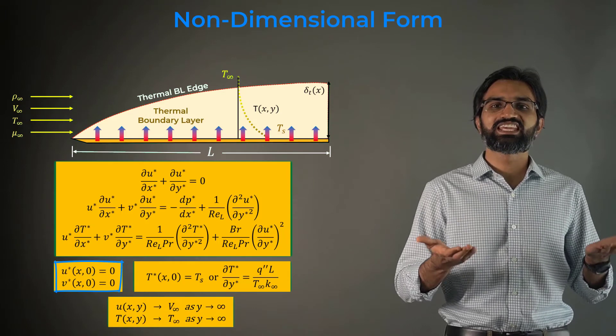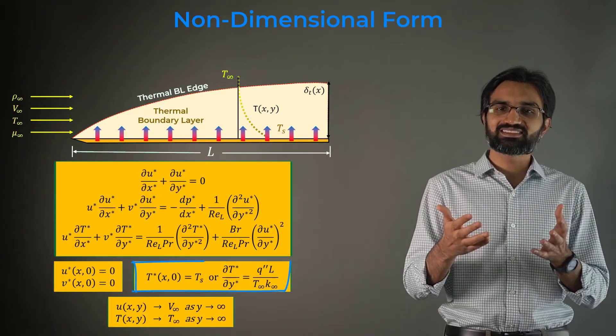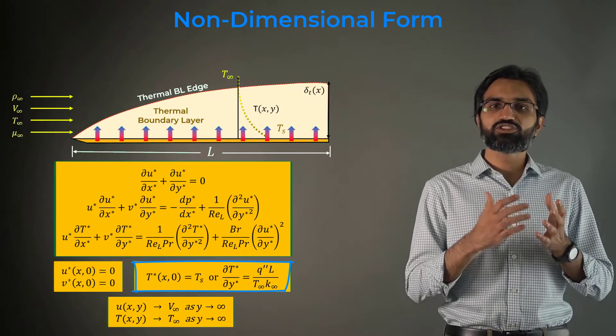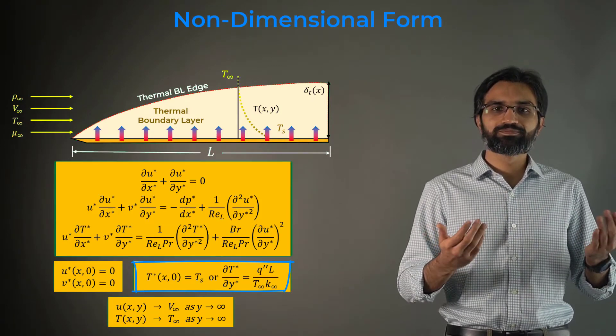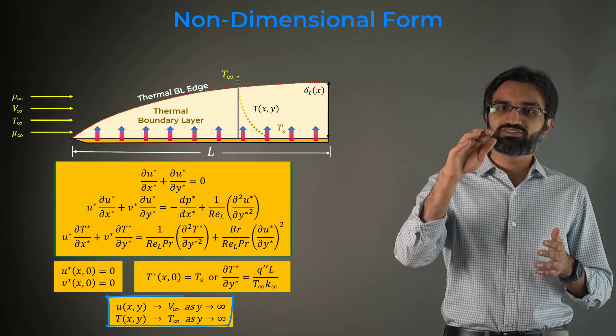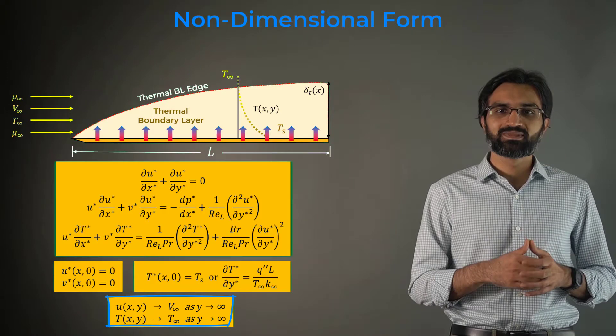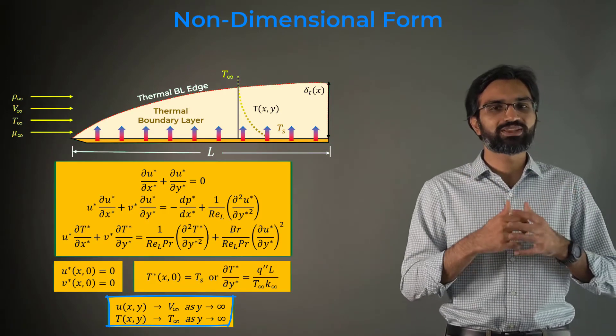At the walls, we impose a no-slip condition. On the thermal side, we either need the knowledge of the wall temperature or wall flux. At the edge of the boundary layer, both fluid velocity and temperature equal their respective freestream values.